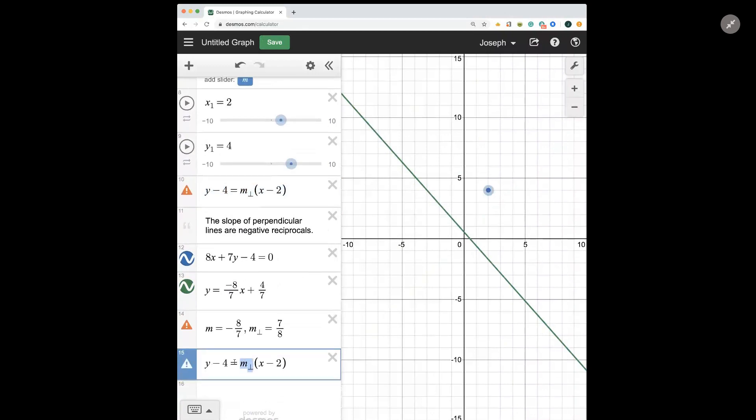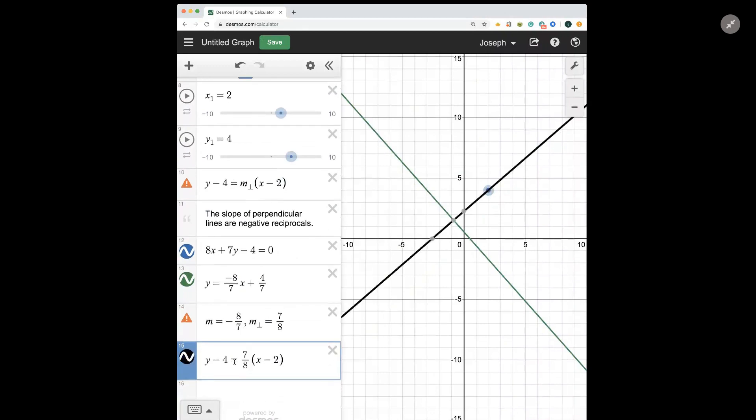Our equation of our line, we substitute in for the slope, and we get y minus 4 is equal to 7 over 8 times x minus 2. And this is the answer to our question.